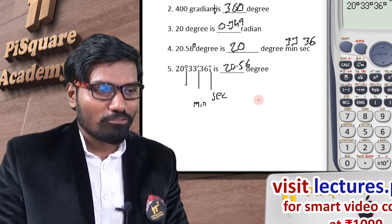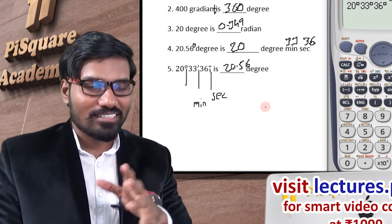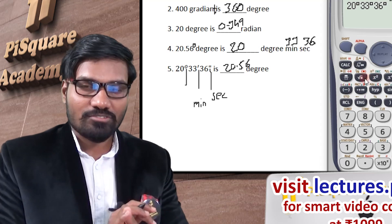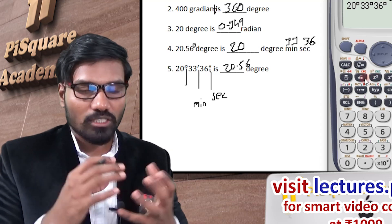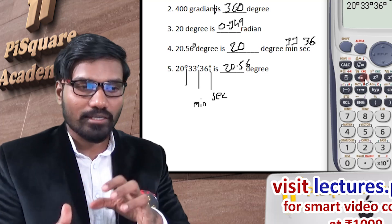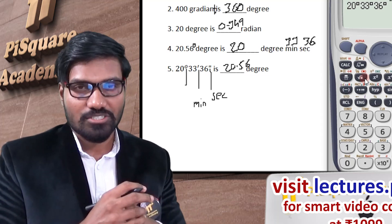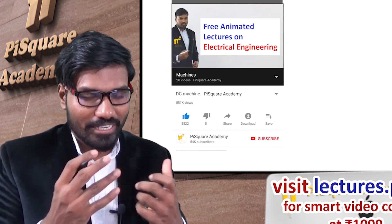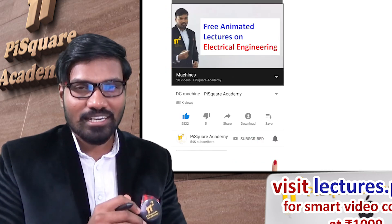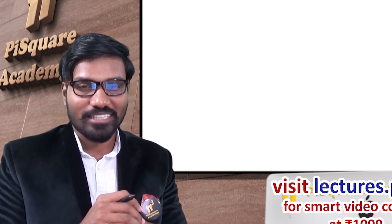Of course you can also use the regular formula, multiplying with π/180, for direct conversion. That's it for this video. In the next video, I will talk about complex number conversion — polar form to rectangular form, rectangular form to polar form, and different complex variable operations. Thank you. If you are watching this channel for the first time, subscribe and ring the bell so you never miss any update from Pi Square.